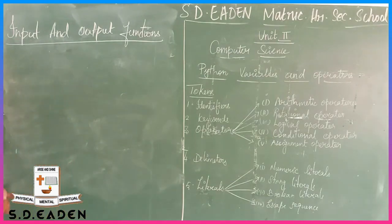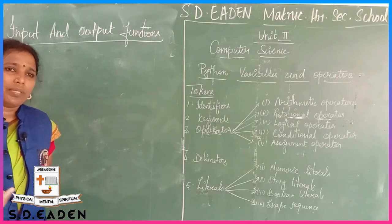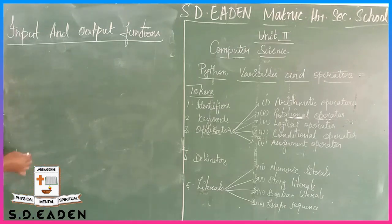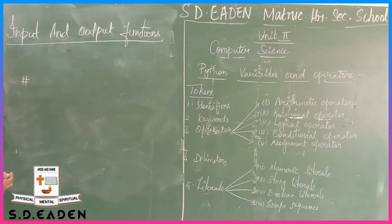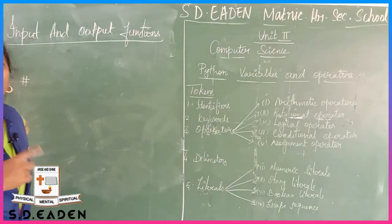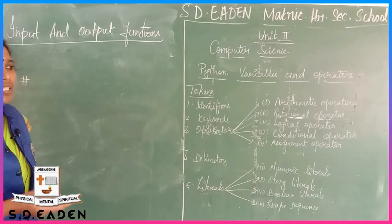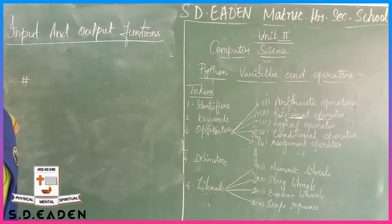Next is comments - this is a small topic. You can see a hash symbol. In the program, you write commands with the hash as reference throughout the entire program.